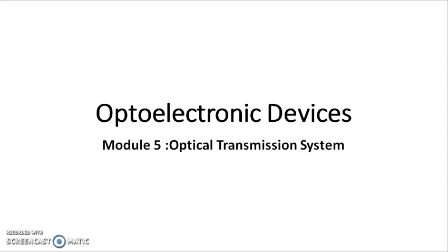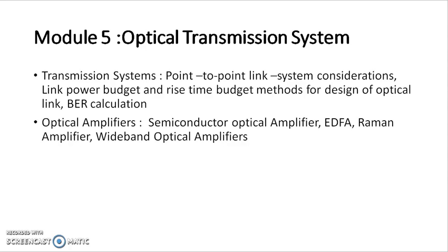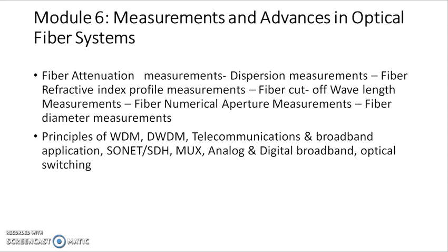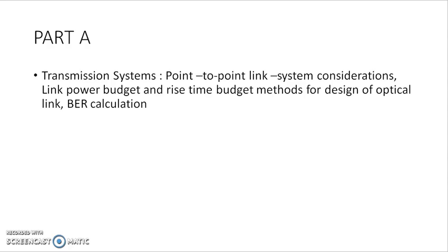Hello everyone. We start here with Opto-Electronic devices, Model 5: Optical Transmission System. We have seen earlier Model 4, Optical Fiber, in which we considered the coupling and the receiver. This is the model we learn in this lecture. The next model is Model 6: Measurement and Advances in Optical Fiber System. Model 5 is divided into Part A and Part B — Part A consists of a Transmission System and Part B consists of an Optical Amplifier.